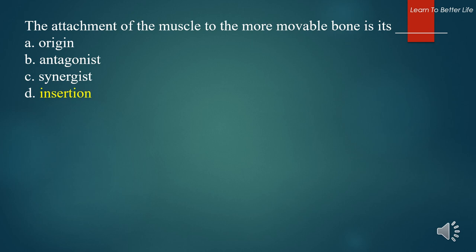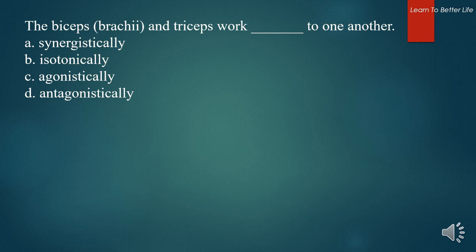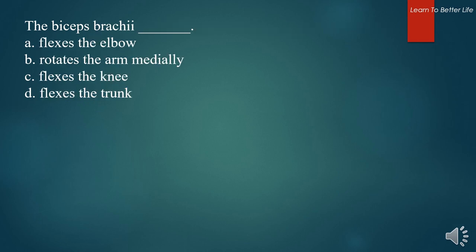The biceps brachii and triceps work what to one another? A. Synergistically. B. Isotonically. C. Agonistically. D. Antagonistically. The answer is D. Antagonistically. The biceps brachii. A. Flexes the elbow. B. Rotates the arm medially. C. Flexes the knee. D. Flexes the trunk. The biceps brachii flexes the elbow.